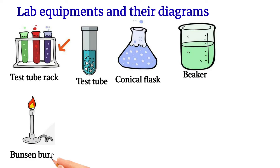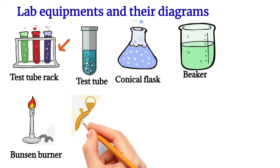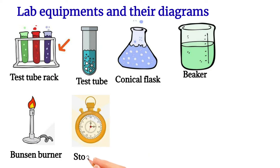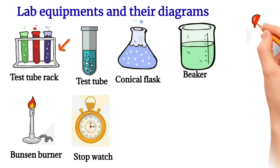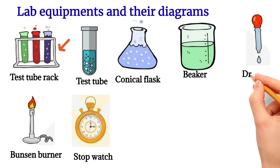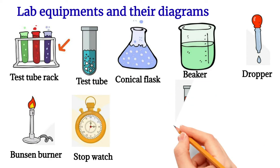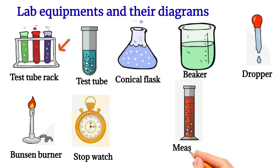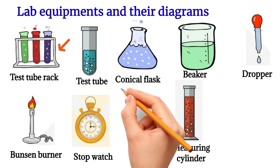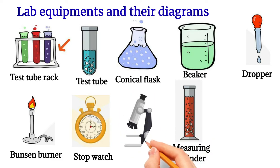This picture represents a Bunsen burner, which is used to heat things in the lab. This is a stopwatch, which helps to measure time. This is a dropper, used to drop chemicals inside the test tube. This is a measuring cylinder, which helps to measure the volume of liquid. And this is a microscope.